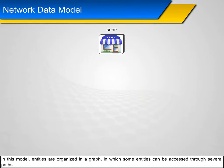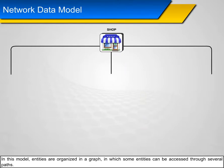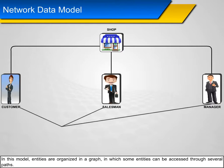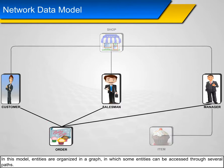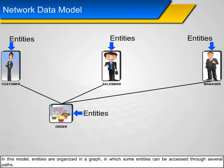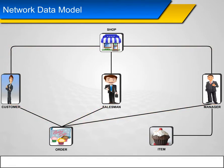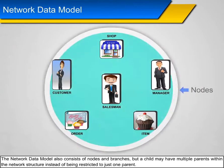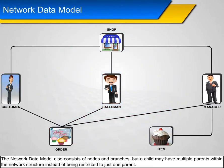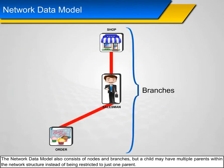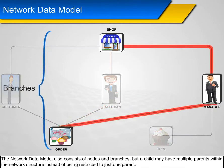In the network model, entities are organized in a graph in which some entities can be accessed through several paths. The network data model also consists of nodes and branches, but a child may have multiple parents within the network structure instead of being restricted to just one parent.